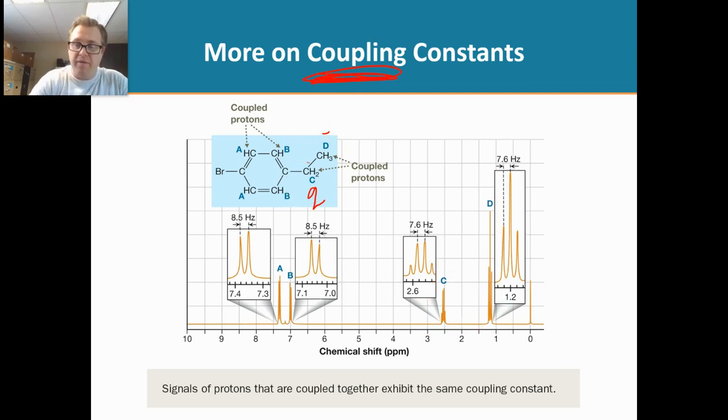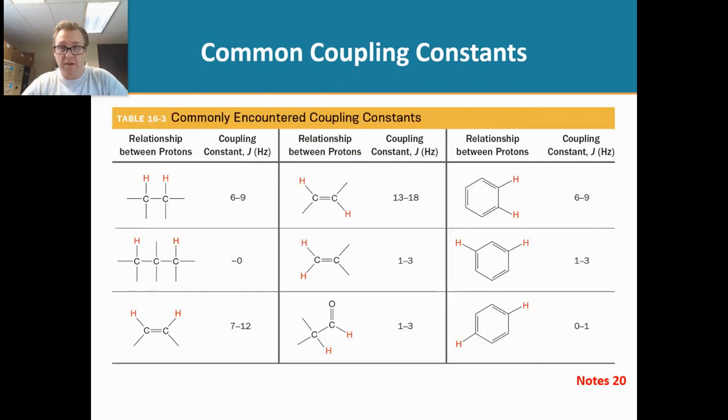But if we made, if we asked the question, is C and B next to each other, are they coupled to one another? You would be like, well, let's look at the J-coupling constants. B has a J-coupling constant of 8.5 versus 7.6. They're not the same J-coupling constant, so they're not coupled to one another. And it helps us to figure that out. Isn't that pretty slick? So that's what J-couplings are used for.